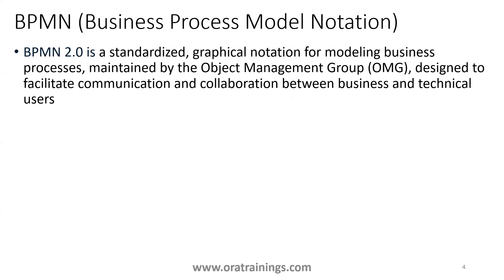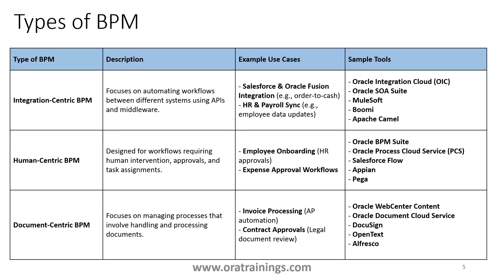There are a couple of types of BPM products in the industry, each with specific functionality. The first is integration-centric BPM, wherein it handles communication between two integrations — like Oracle OIC, which is typically used for integrating heterogeneous systems where communication happens between different systems.